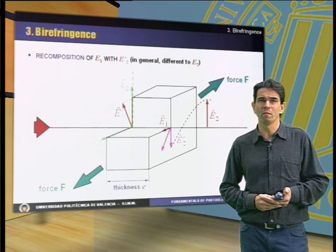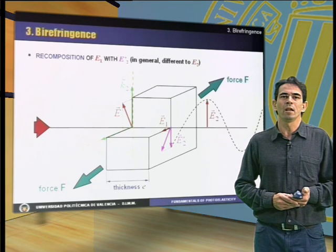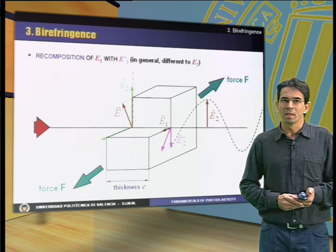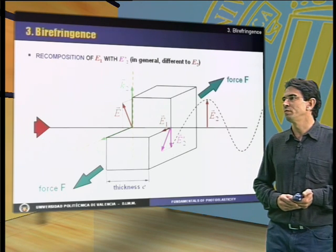Therefore, the new ray combination produces a new wave that has different orientation than the original polarized ray. Since the orientation has changed, it will not be extinguished by the crossed filter.